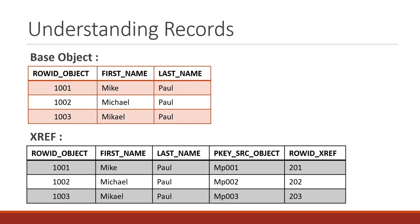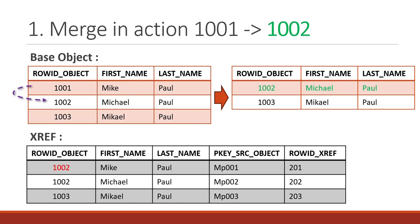Now we understand the records — let's understand the merge scenario. Merge scenario is equally important to understand before unmerge. Let's consider the first case where merging happens between records 1001 and 1002. They are matched together and the surviving record is 1002, which has first name Michael and last name Paul. At the xref level, the row ID object of the first record changes from 1001 to 1002, highlighted in red at the bottom.